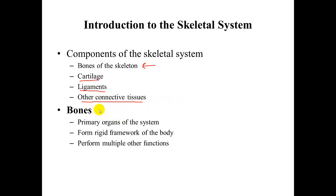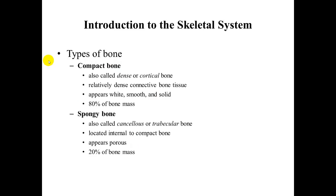Bones are the primary organs of the system. They form the rigid framework of the body and perform many other functions we will cover at the end of this lecture. There are two main types of bone. Compact bone provides much of the skeletal system's strength; it is a relatively dense connective tissue comprising approximately 80% of bone mass.